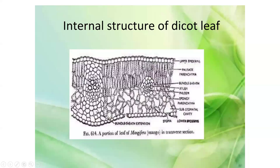In the upper epidermis, no stomata are present, whereas in the lower epidermis, stomata are present along with substomatal cavities. This is the spongy parenchyma region where intercellular spaces are present, helping in exchange of gases. The palisade parenchyma contains chloroplasts and mainly helps in photosynthesis.